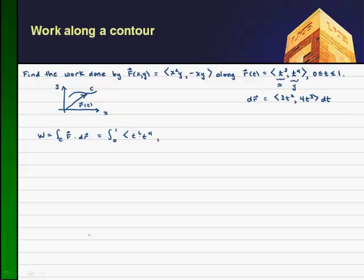And then the y component on my force is just negative xy. So I get a minus t cubed times t to the 4th. And I want to dot that into my dr, which is 3t squared, 4t cubed dt.